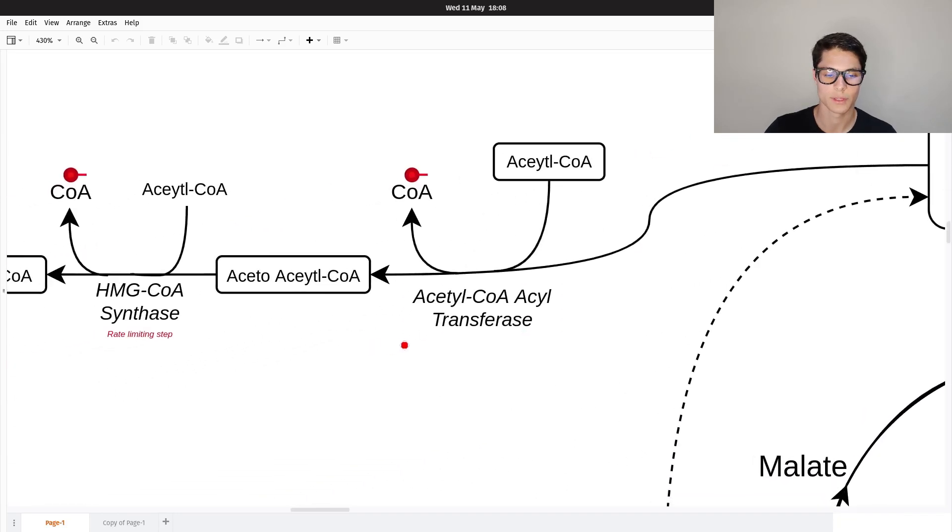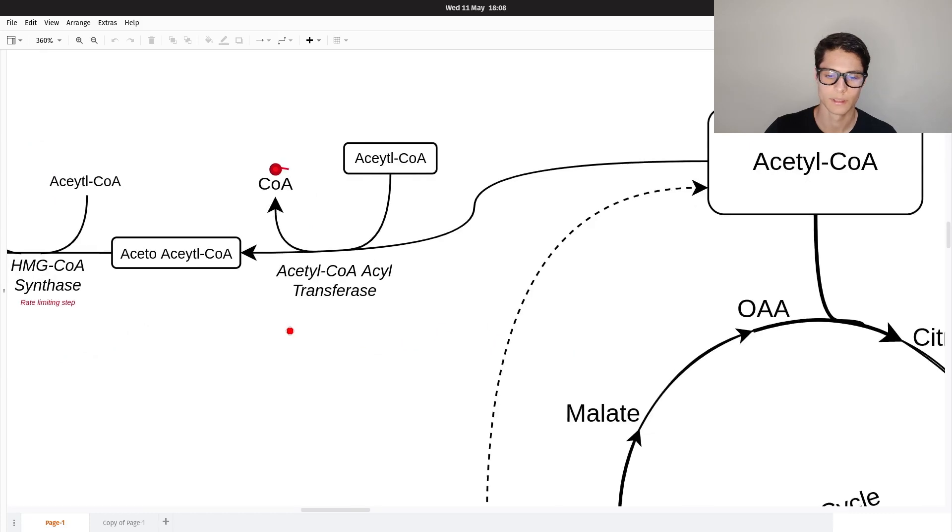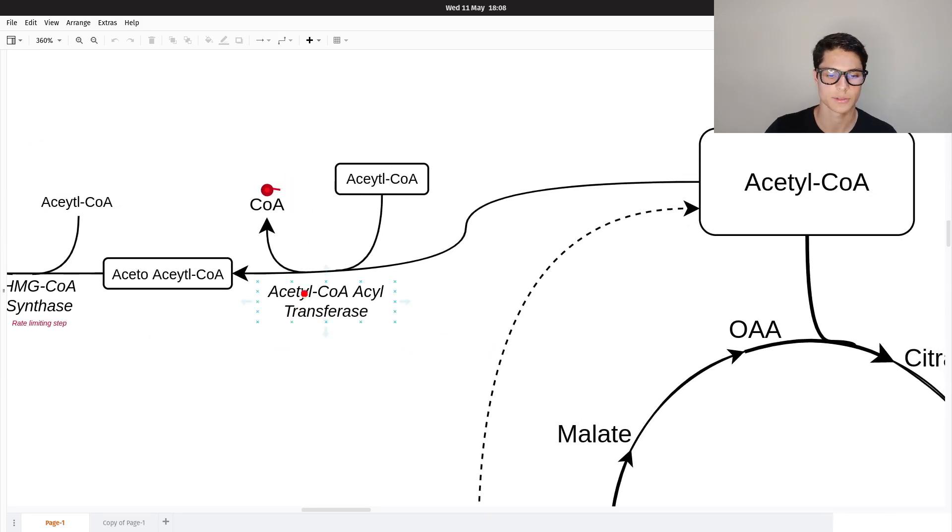Acetyl-CoA is then converted to acetoacetyl-CoA. This is the first enzyme, acetyl-CoA acyltransferase. We're going to combine two acetyl-CoA together as you can see here. This is done when we already have a lot of energy.